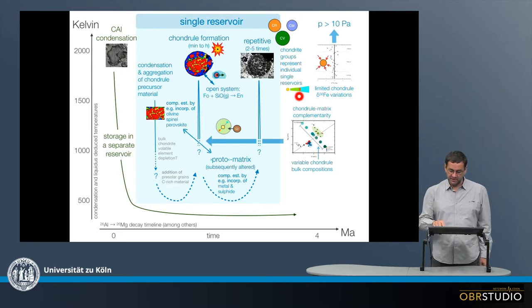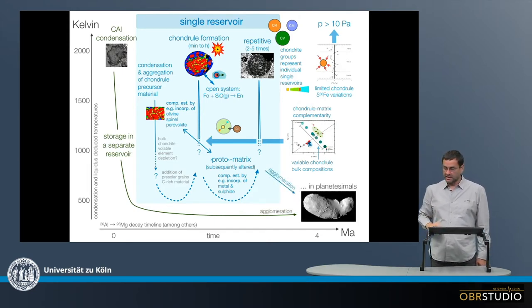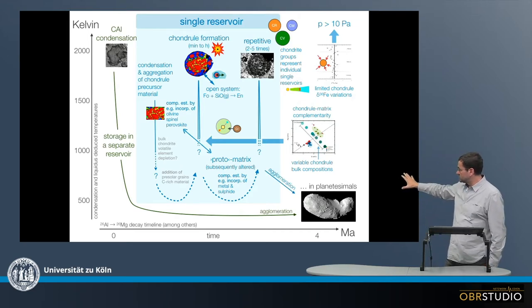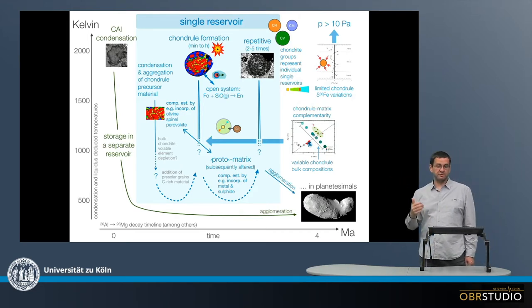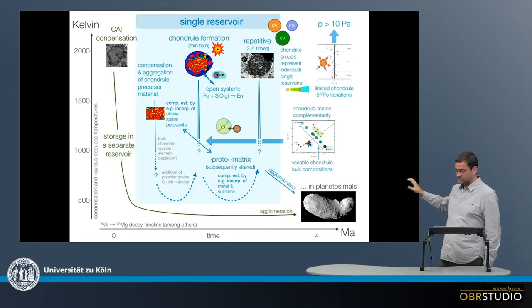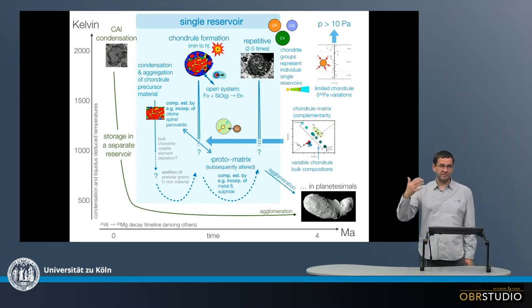And one reason why this happened might have been Jupiter here in between, which prohibited gravitationally that this material also was transported more to the inside of the disk. And finally, everything was agglomerated into the parent body, now together with the CAIs, which formed after maybe something like four million years.